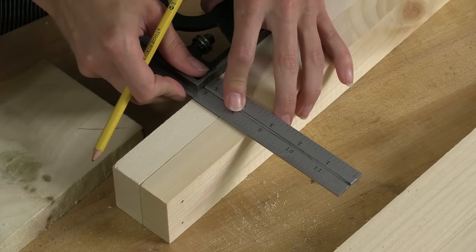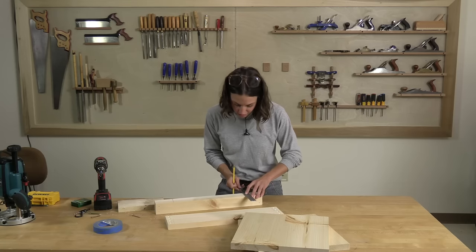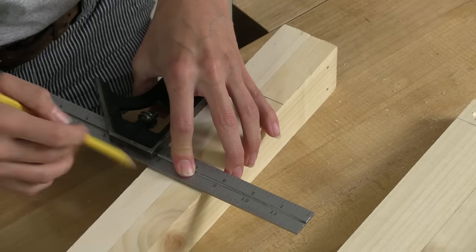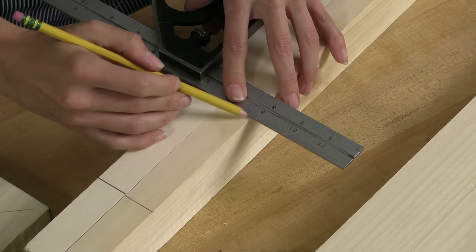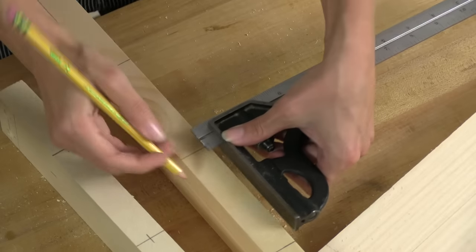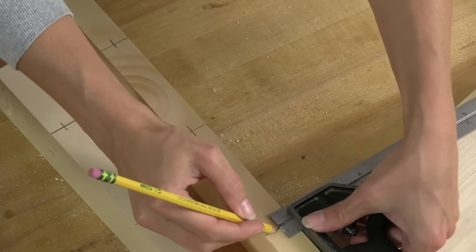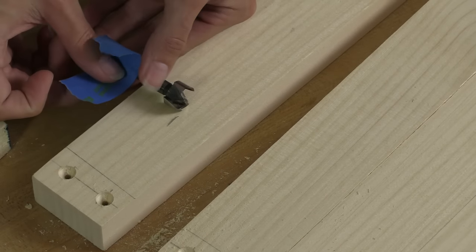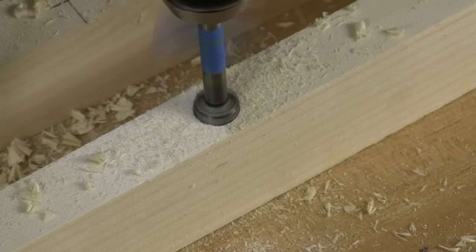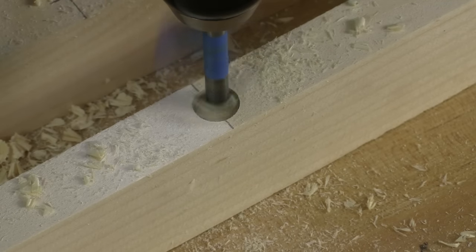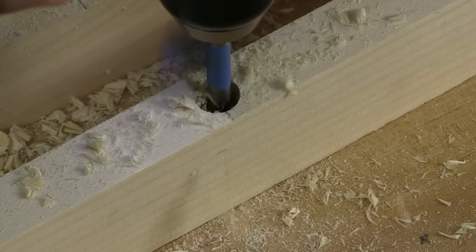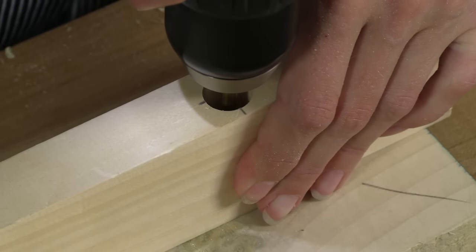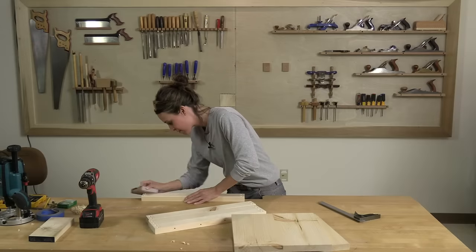While I have the stretcher pieces out, I also lay out for the counter bore and clearance holes that I will use to attach the tabletop once the base is all assembled. I'll put four screws from underneath through the top stretchers into the tabletop to hold it nice and secure. The layout isn't hypercritical. I just want to make sure there's enough screws to hold it nice and snug. I'll use a Forstner bit to drill the counter bores and flag that bit so that the screws do not pop through the tabletop when I assemble the whole thing together.